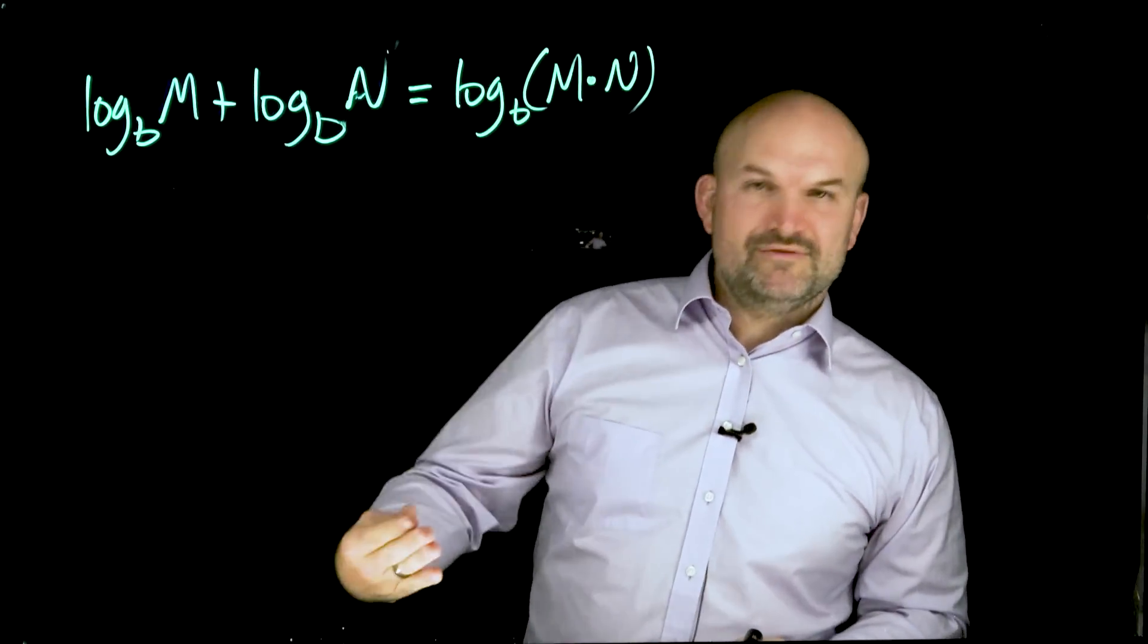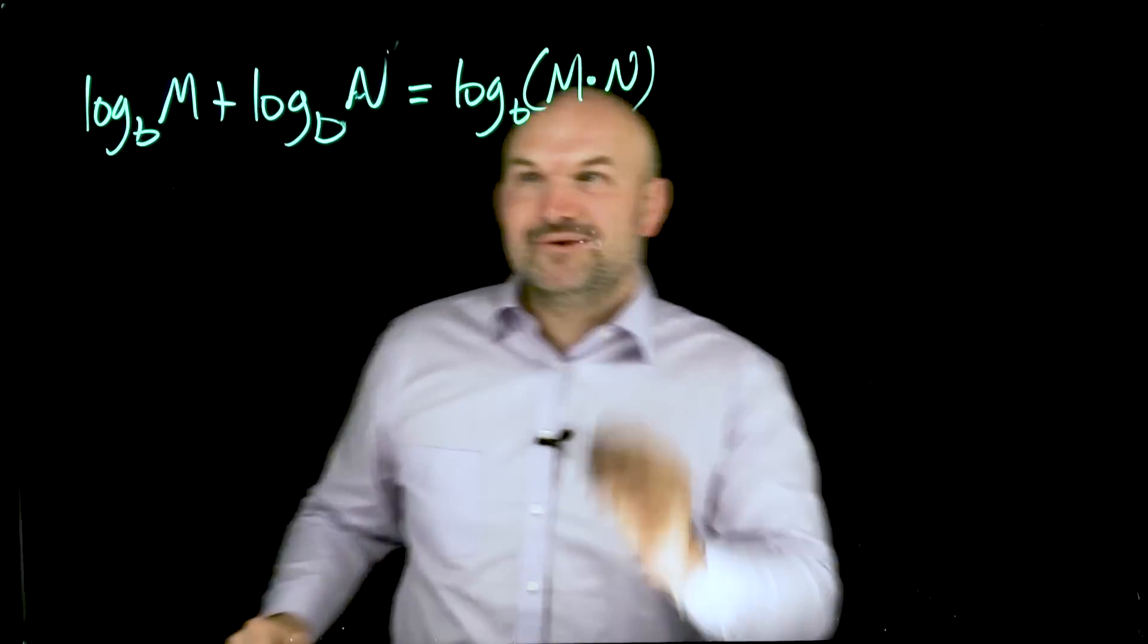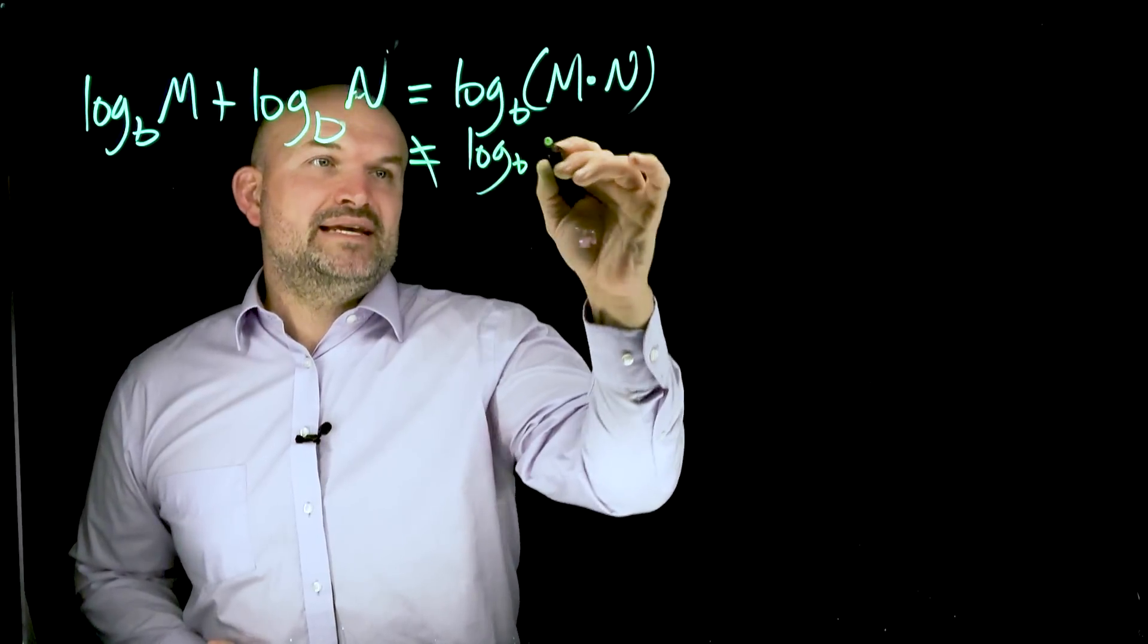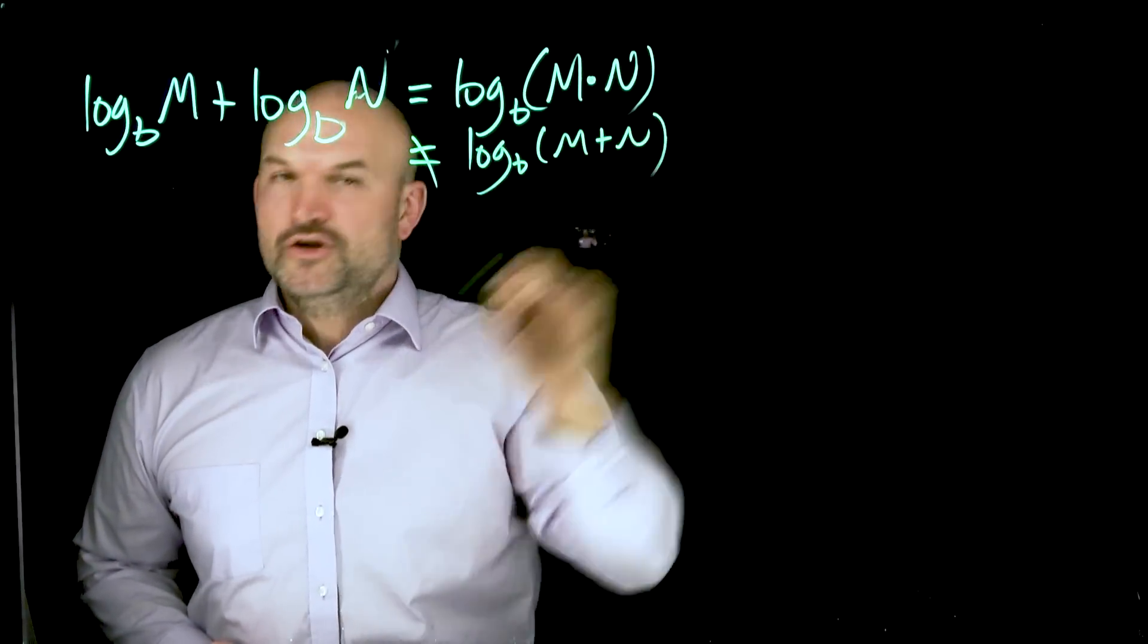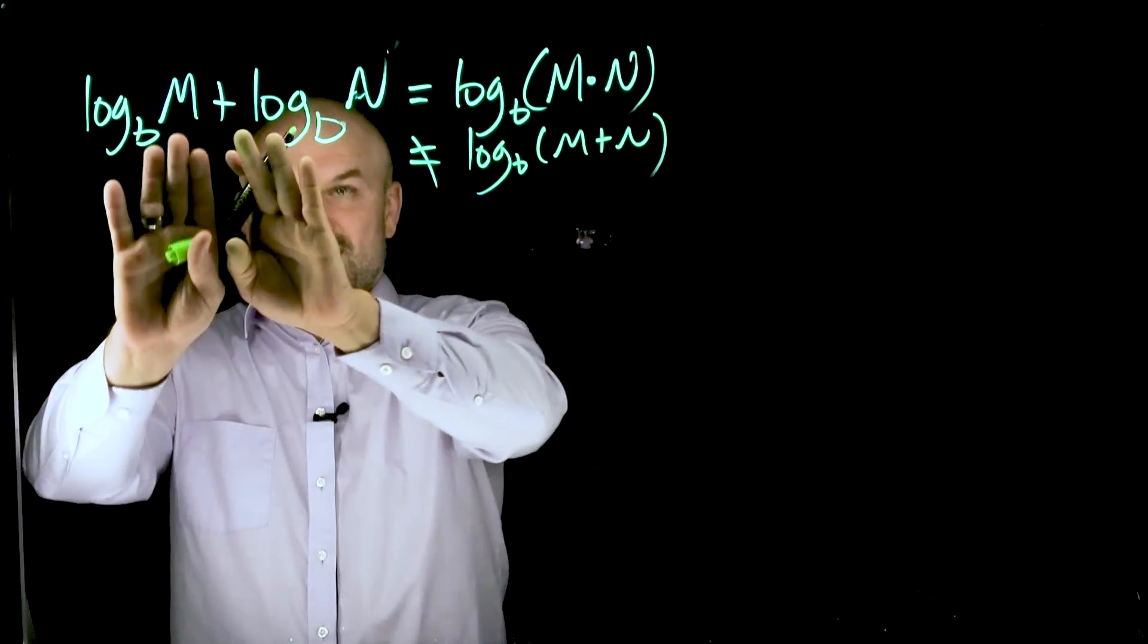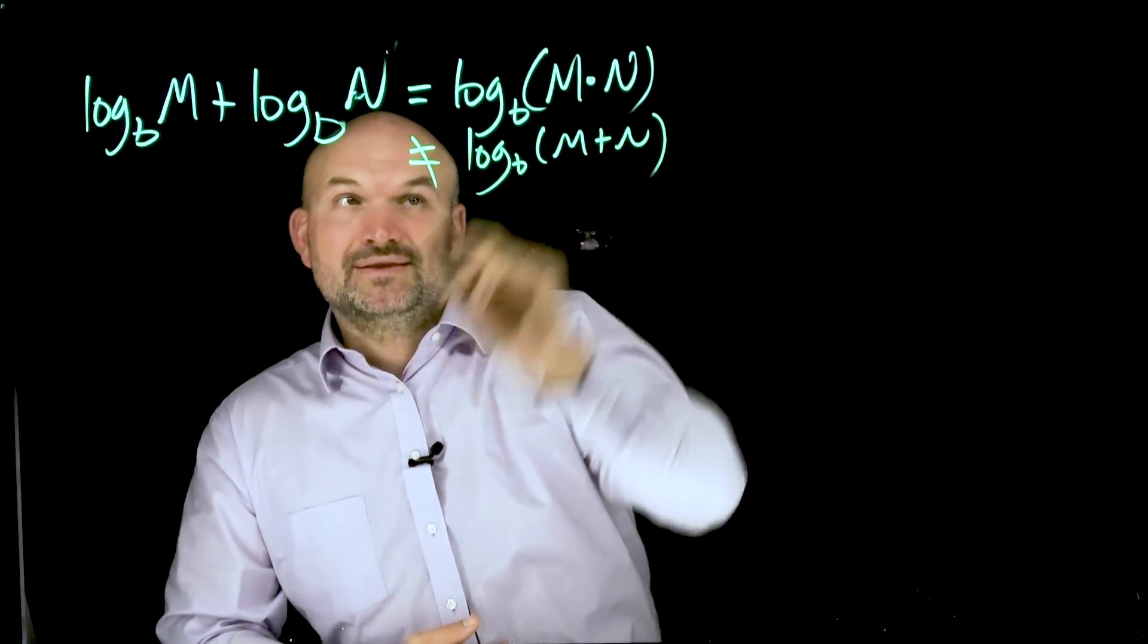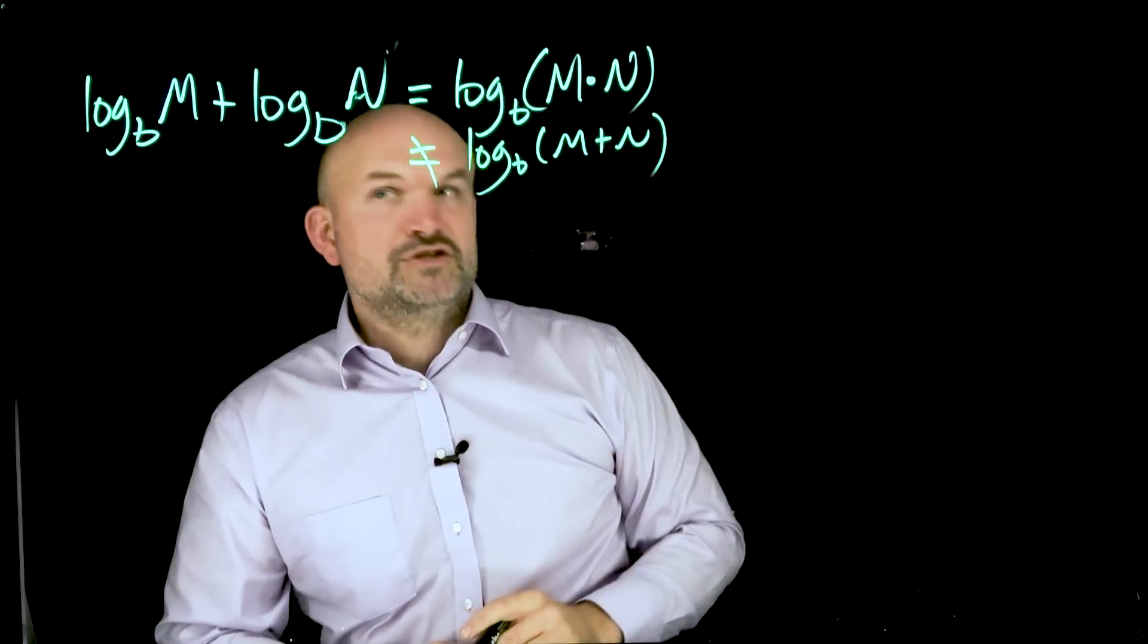Now, a very common mistake that students will make, that's why I'm saying write this down, is sometimes students will say, oh well, this has to be log base B of M plus N. No, do not do that. The sum of two logarithms with the same base is going to equal the single logarithm of the product of their two arguments.